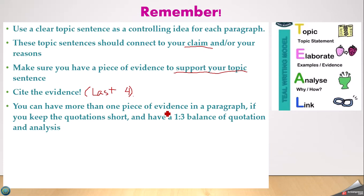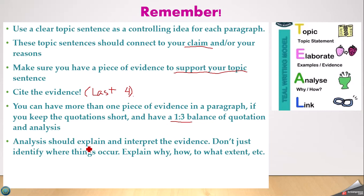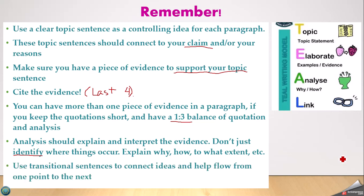You can have more than one piece of evidence per paragraph. Two of our examples had two different pieces of evidence. Try to balance quotations with your analysis — roughly one to three: for every one line of quotation, you have three sentences of your own writing. Analysis should explain and interpret the evidence, not just identify where things occur. Explain how, why, and to what extent. You're telling your reader how things should be interpreted — that's the point of the paper. Use transitional words and sentences to connect ideas and help flow from one point to the next. If you have questions as you go, just let me know. I can't wait to read your work. Thanks everybody.